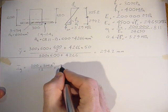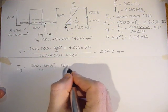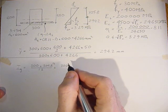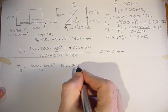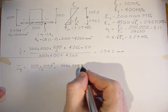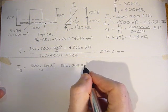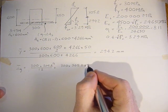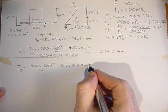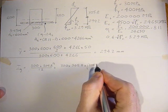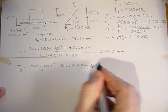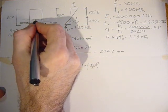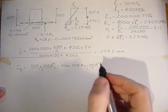plus its AD squared component. That's 300 wide times 305.8 times D squared, which is 305.8 over 2 squared. It's the distance from this centroid to the neutral axis.